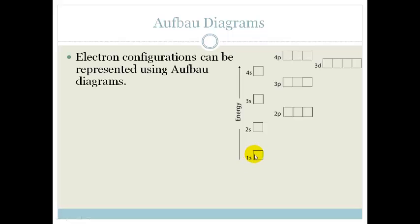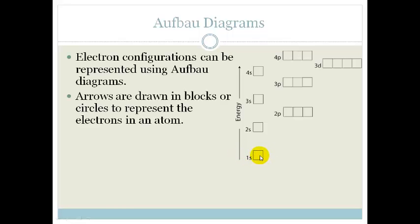Luckily, scientists came up with Aufbau diagrams. Now, Aufbau diagrams are just a way for us to represent the electron configurations. Arrows are drawn in the blocks or circles to represent the electrons in the atom. Now, I've got a drawing here of blocks. I use blocks. But some textbooks use a circle instead of a block to show the electrons. It's not a big deal. It doesn't matter if we're drawing circles for our orbitals where our electrons are going to fit in or if we draw squares.